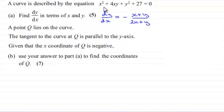We were given this curve which was described by this equation here: x squared plus 4xy plus y squared plus 27 equals 0, and asked to find dy by dx in terms of x and y. And the answer to that was dy/dx equaled minus (x plus y) over (2x plus y).